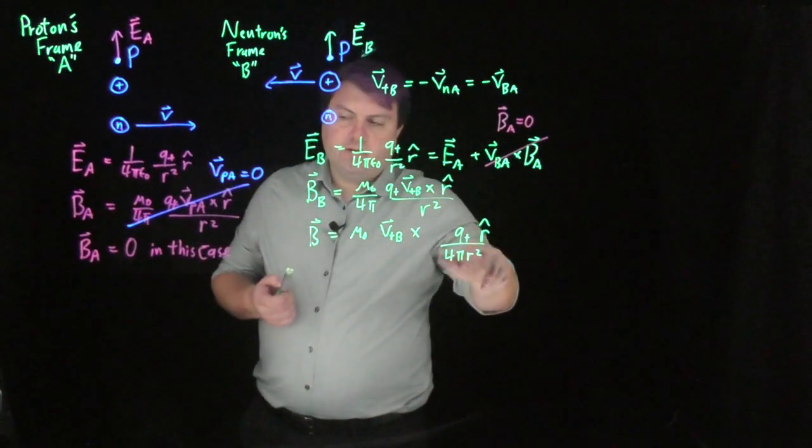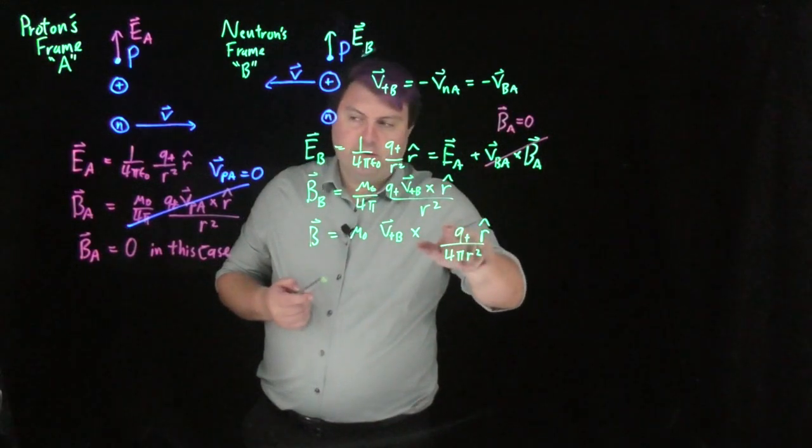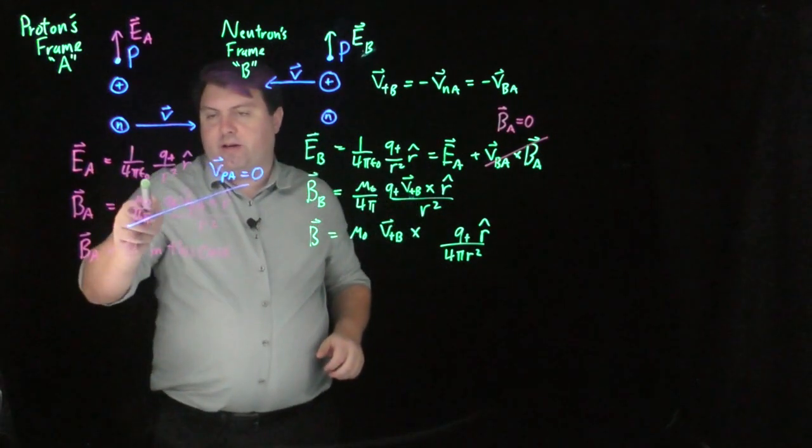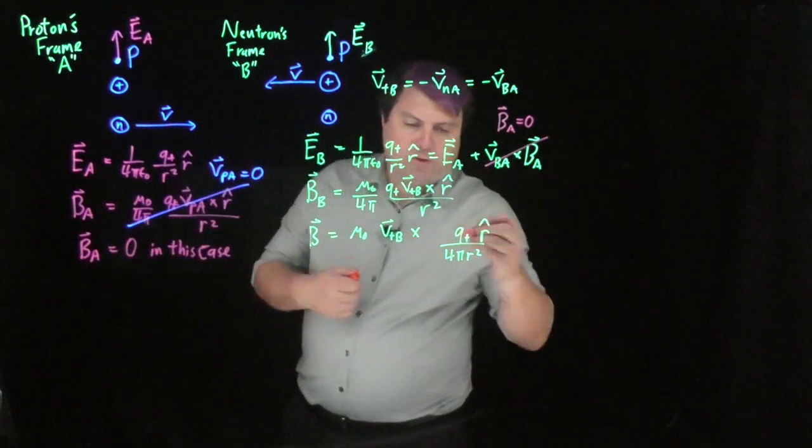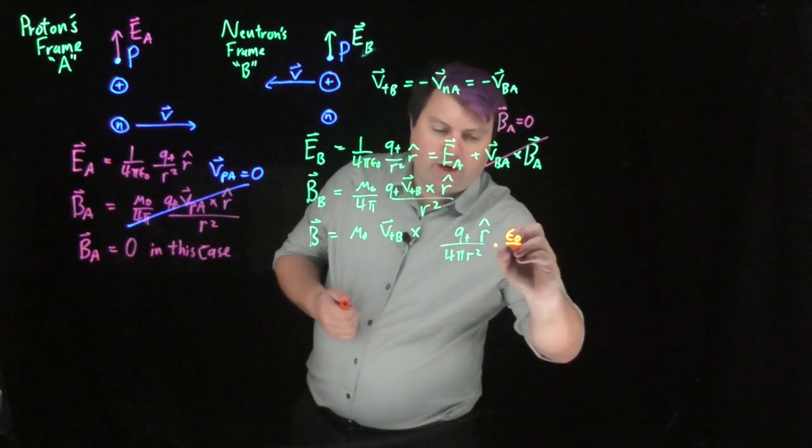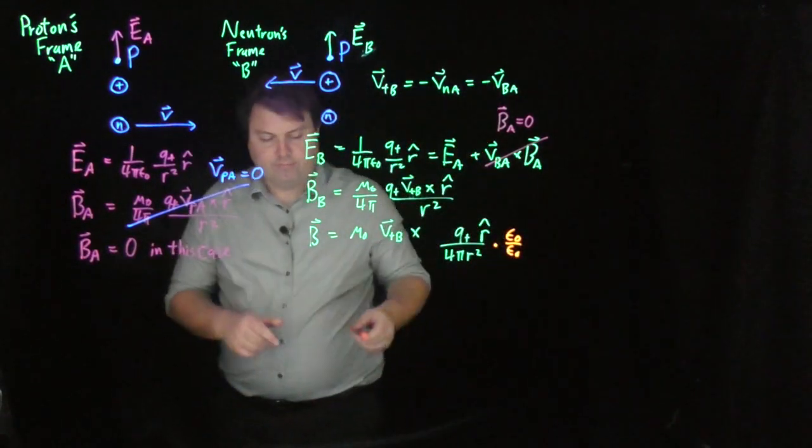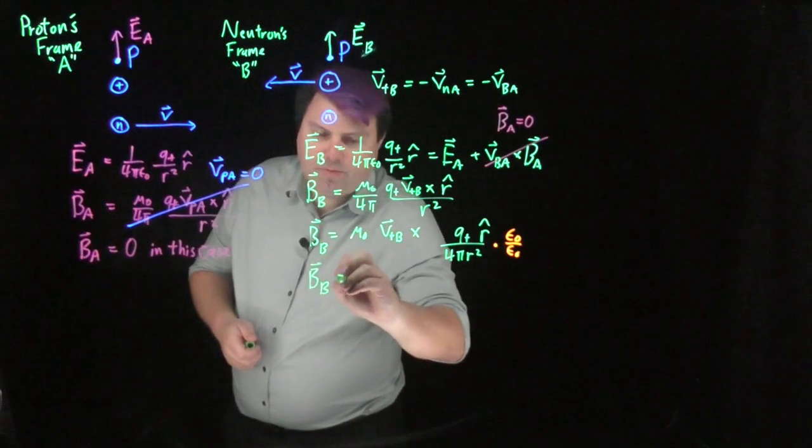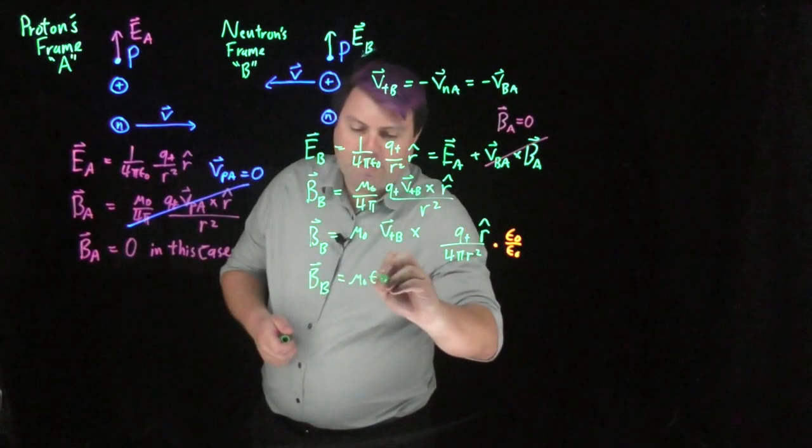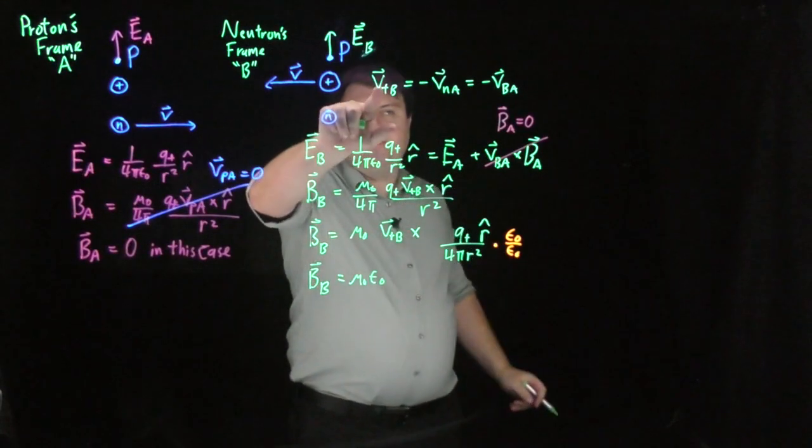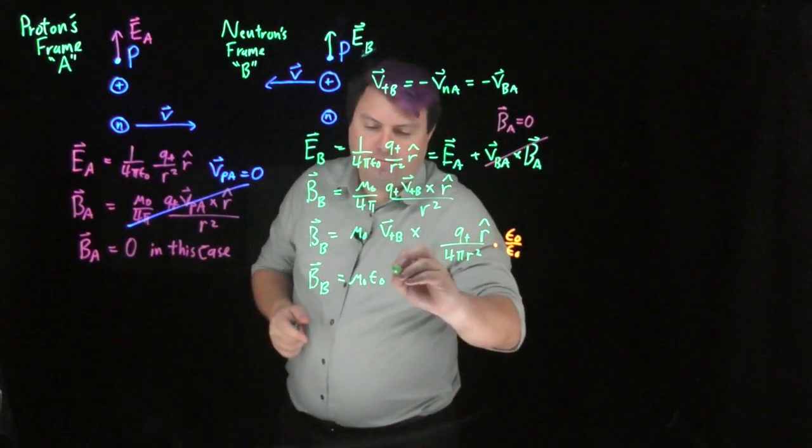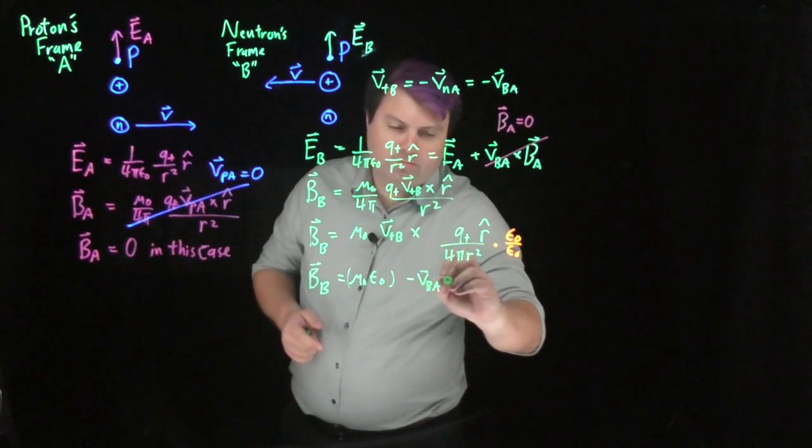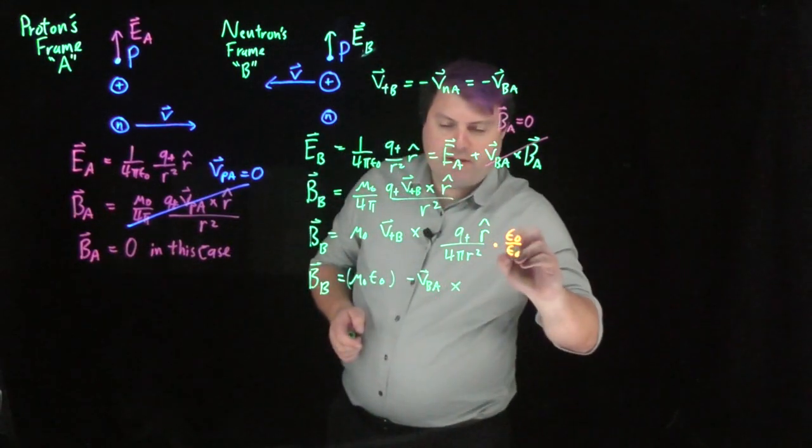Looking at this, this is looking very similar to this right here. All I've got missing is this epsilon naught on the bottom. So what I can do is I can multiply both sides by epsilon naught divided by epsilon naught. Now, if I do this, my magnetic field in B is mu naught times epsilon naught. And instead of writing V plus B, I can write negative V_BA crossed with. And now I have this epsilon naught down here.